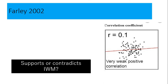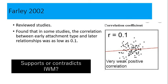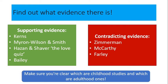Finally, Farley — a meta-analysis reviewing lots of studies in this area — found that in some studies there was a really low correlation, as low as 0.1. If you remember when we did correlations, zero correlation means there's no link at all, and a strong correlation would be around 0.7 or 0.8 ideally. A correlation coefficient as low as 0.1 is not exactly conclusive. So this is evidence against the internal working model.